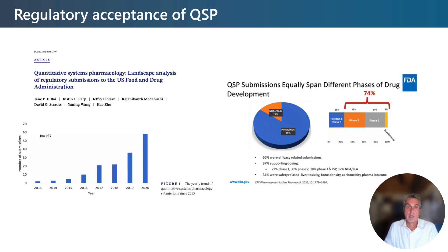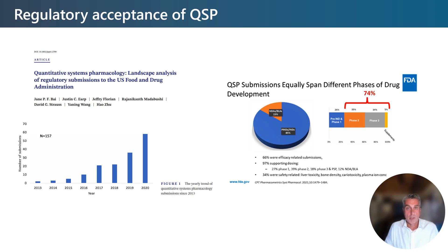Regulatory agencies, in particular the US Food and Drug Administration (FDA), have embraced QSP in recent years. This graph shows how the number of FDA submissions supported by QSP has increased year on year since it first emerged 10 years ago. The FDA analysis shows that the majority of regulatory QSP submissions — almost three quarters — are focused on clinical application, mainly supporting dose and dose regimen selection.